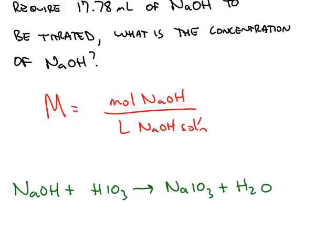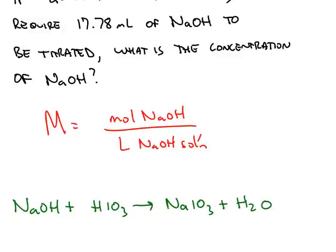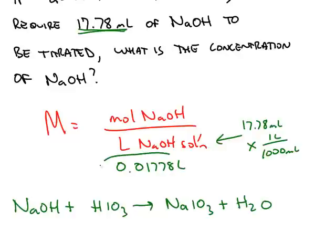We know one of those two things in the problem. We know that we had 17.78 milliliters. So the denominator, 17.78 milliliters, we can turn that into liters by dividing by 1000, so this is going to be 0.01778 liters.